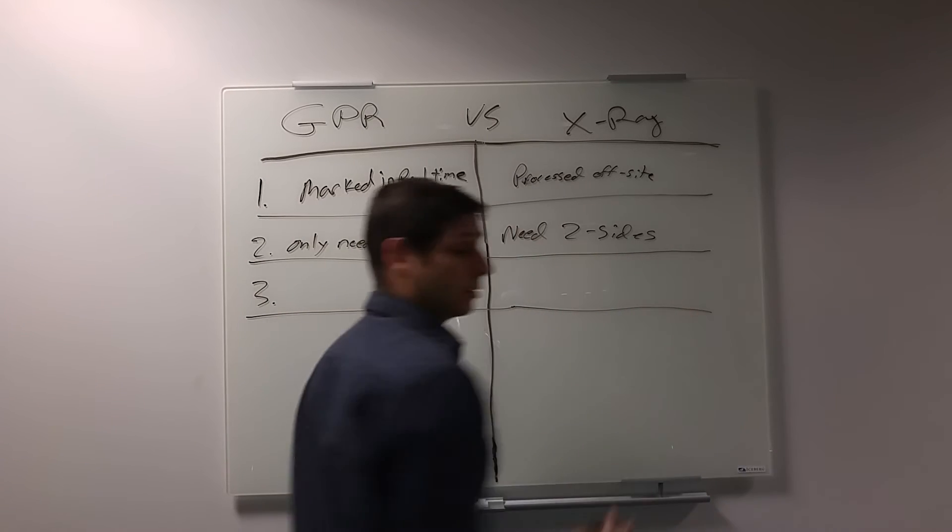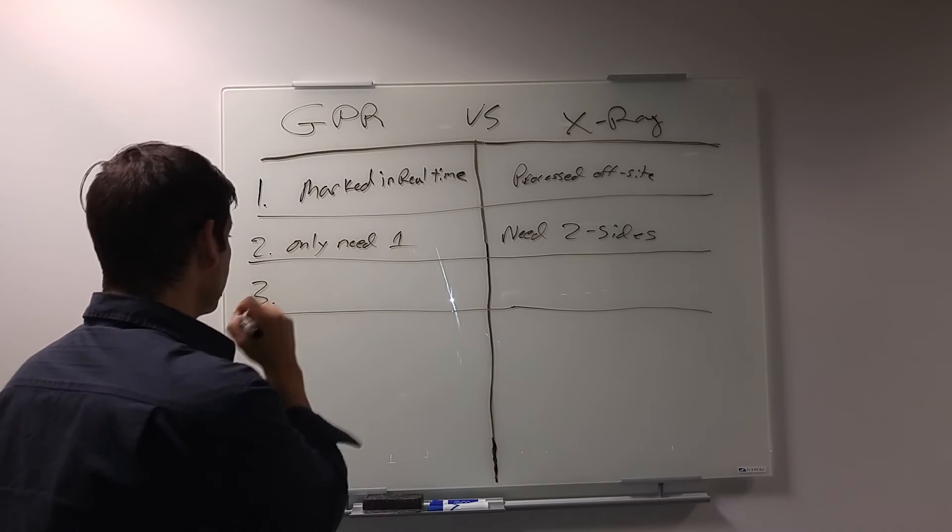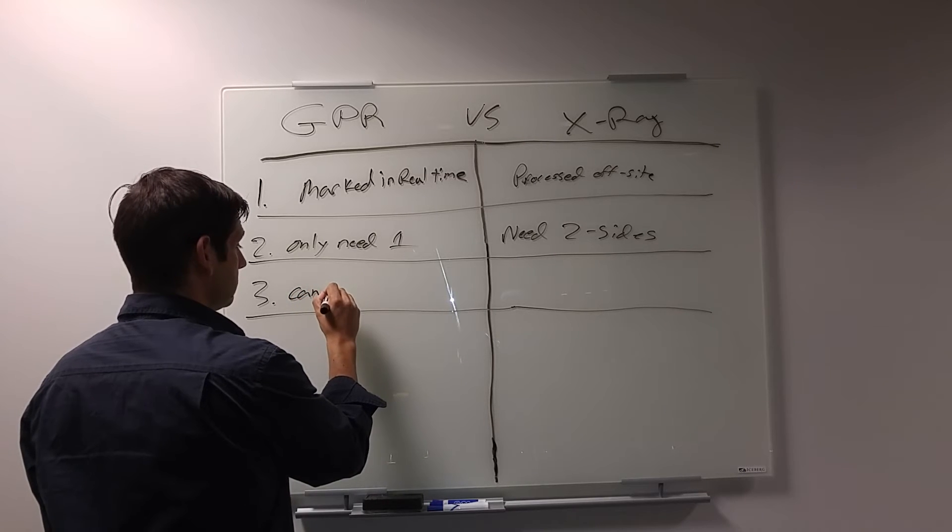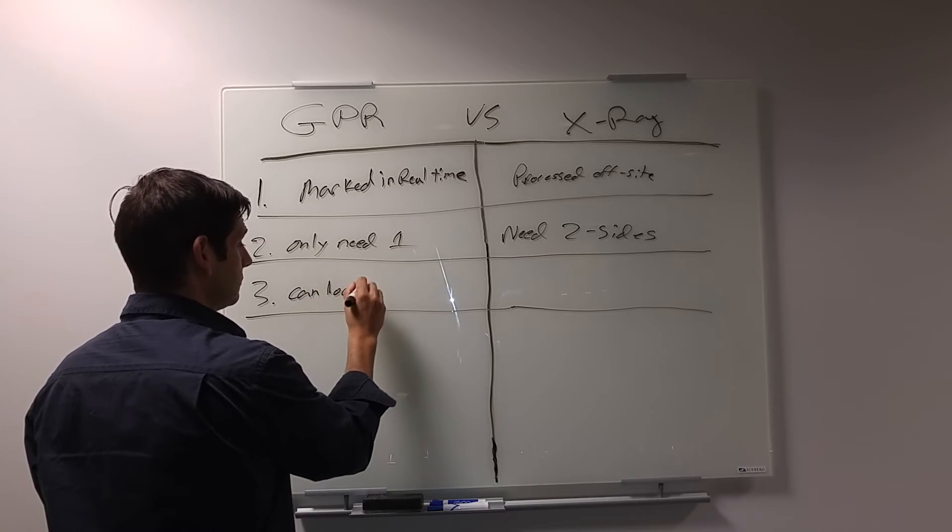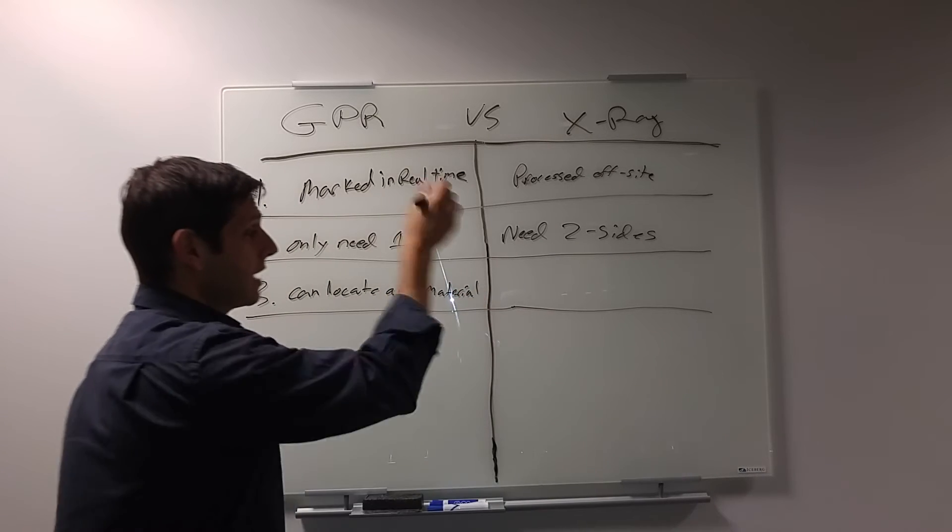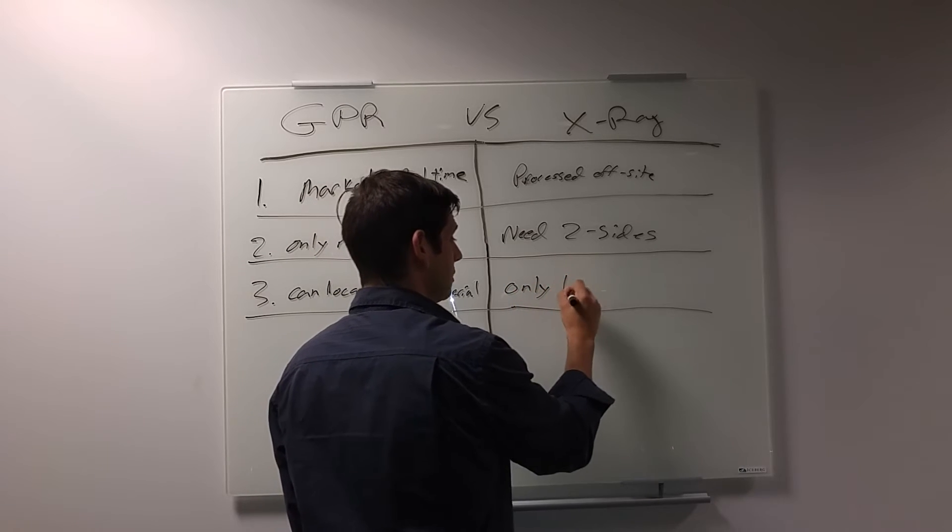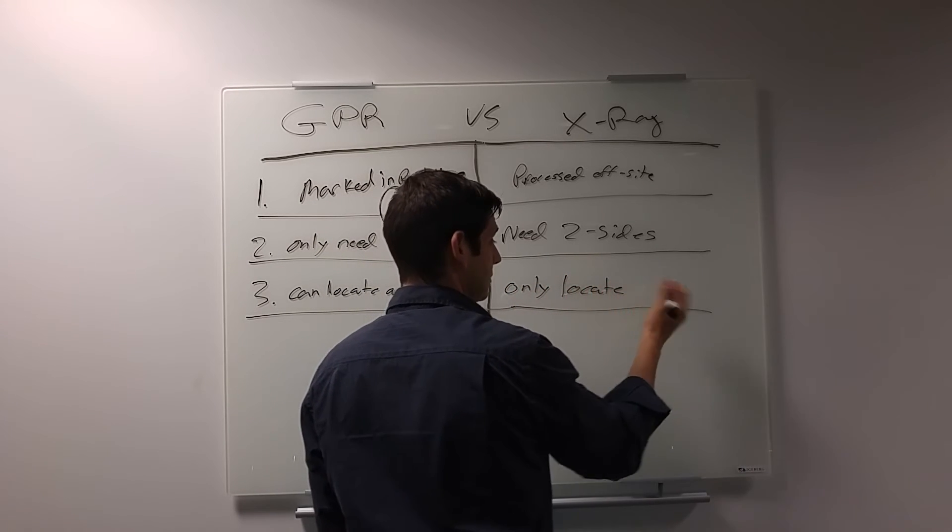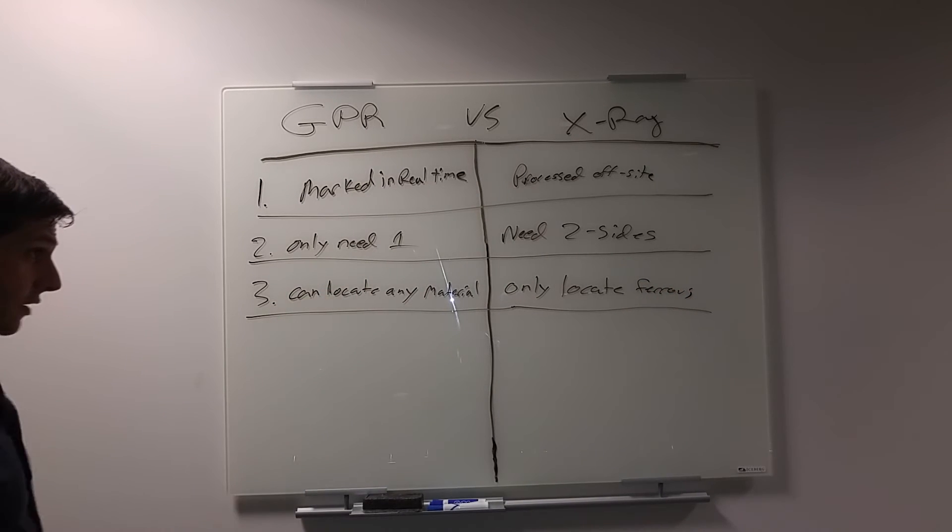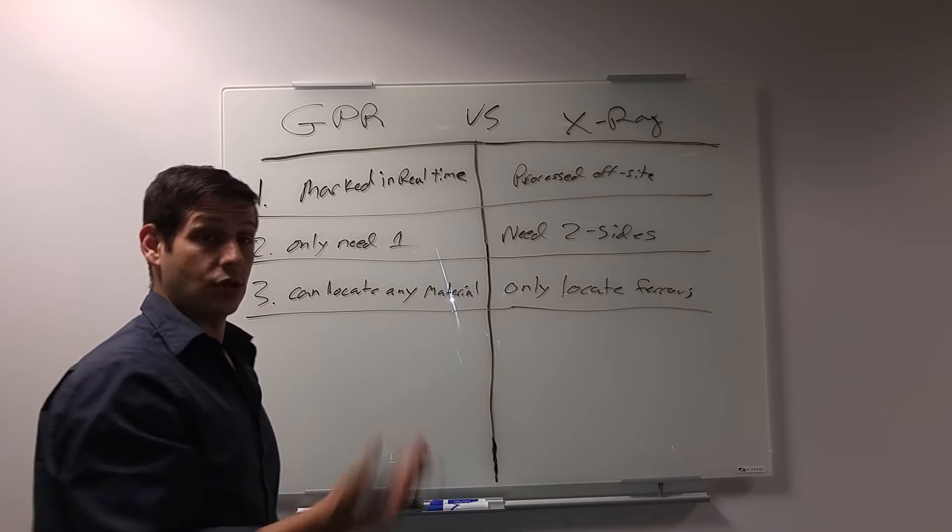And furthermore, get at me in the comments and tell me if I'm wrong about any of these, okay? But tell me if I'm wrong. But three, GPR can locate any material. X-ray, I think, only locates ferrous materials. So it's limited to what it can locate, this can locate anything, as long as there's a contrast.